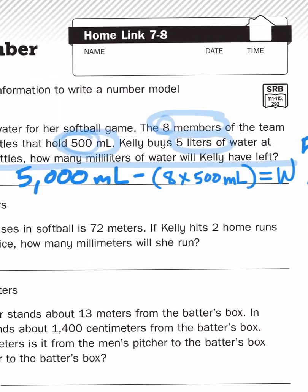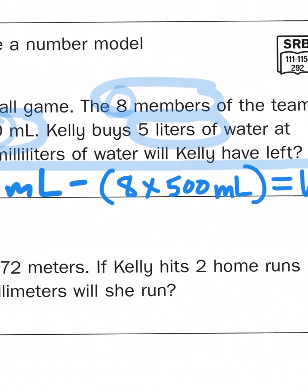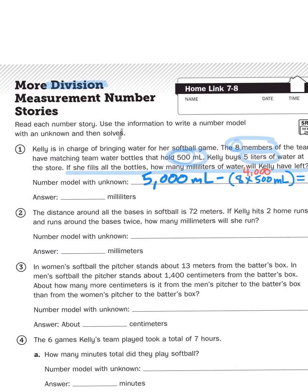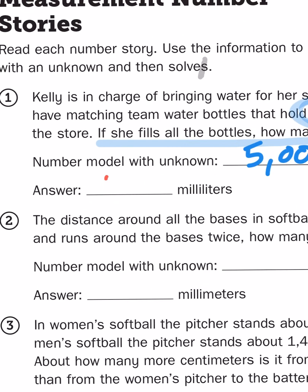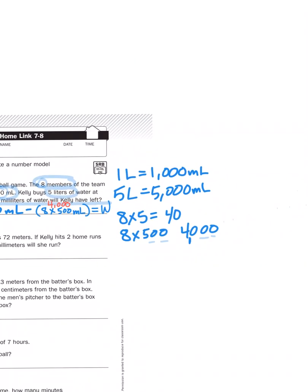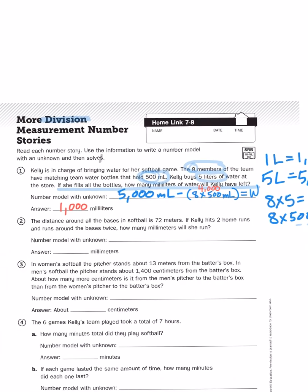Well, if we know that eight times five hundred is going to give us four thousand, then the problem literally becomes what is five thousand minus four thousand. Well, five minus four, of course, is one. So, that would give us a total of one thousand milliliters. Now, you might be wondering to yourself, well, Mr. Wassman, where did the division come in? I used a little bit of multiplication here, and I used some subtraction, but not division.